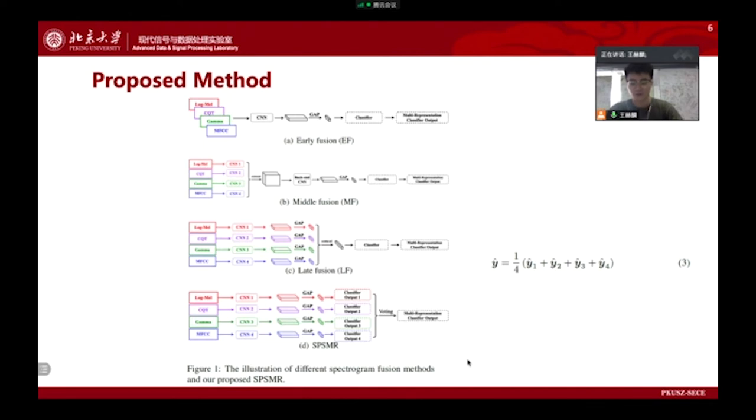Other fusion methods could be the middle fusion in Figure 1B or the late fusion in Figure 1C. However, the same regions in different feature maps reflect different frequency information, which may cause the mismatch problem. In addition, a single classifier trained on the fusion features cannot take advantage of multiple representations well.